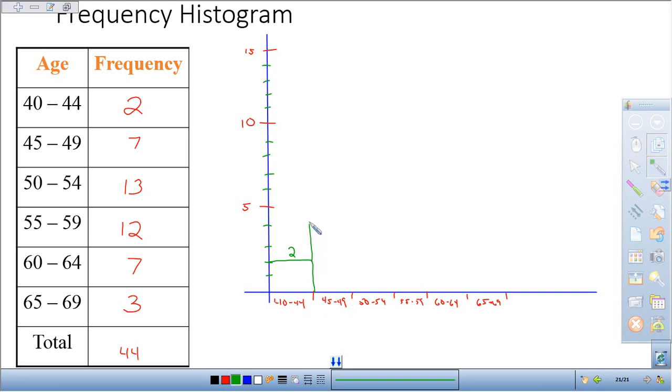So then this one here goes up to 7. Comes up like that, comes over, and comes down like that. And there's 7. Now this next one from 50 to 54 goes all the way up to 13. It comes over, and that again comes down. So that's 13. 12 would look like this. That's the 55 to 59, 7 again here, and then 3 here.